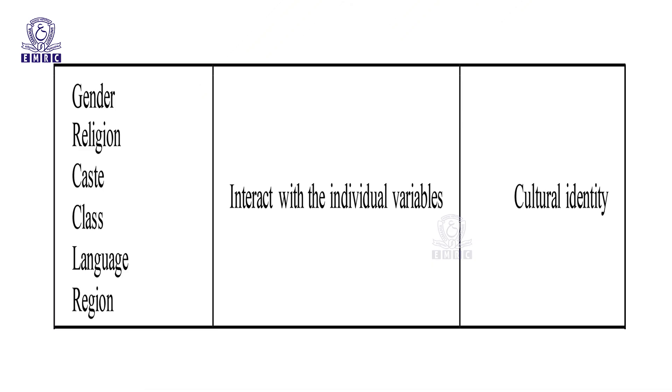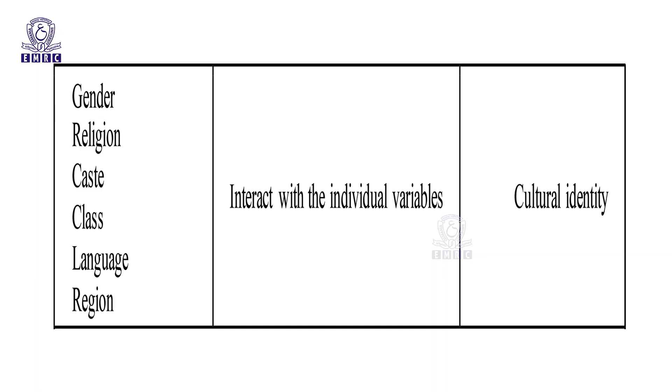These variables — gender, religion, caste, class, language, and region — interact with individual variables to give you cultural identity. The interaction is continuous and two-way across time and is influenced by technological advancement. As shown in the diagram, the variables directly contribute to cultural identity and are not passive. Culture constantly adjusts itself to the experiences of the group and identity partakes of those changes. None of these variables are watertight compartments and always exist in a context.